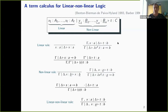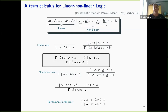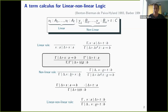Here are the rules. We have the lollipop map, which means that S is a program that will take its input of type A and use it only once to produce a B. When you apply S linearly to T, what is interesting is what happens with the context. For the linear context, you just gather them. For the nonlinear ones, you contract the context, so there is a sharing.